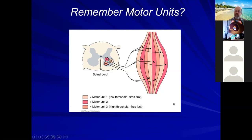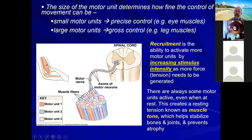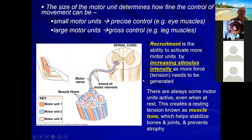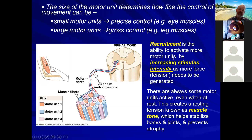Then you have large motor units, which involve a neuron stimulating 100 or even 1,000 muscle fibers, associated with places like the biceps and quadriceps where you generate a lot of power. Small motor units are primarily for precise control; large motor units are for more gross control and power muscles such as the leg and arm muscles.